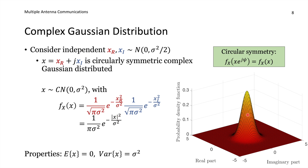Most people who say 'complex Gaussian' mean circular symmetric complex Gaussian. One can define other types with correlation between real and imaginary parts or different variances, but those won't be considered here.